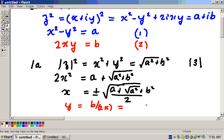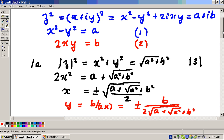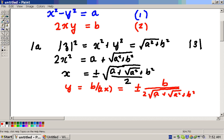And that's equal to B divided by 2, and then we've got a plus or minus, so we put that out here, and then we've got the square root of A plus the square root of A squared plus B squared. Let's move the board down a bit, and that's divided by 2.